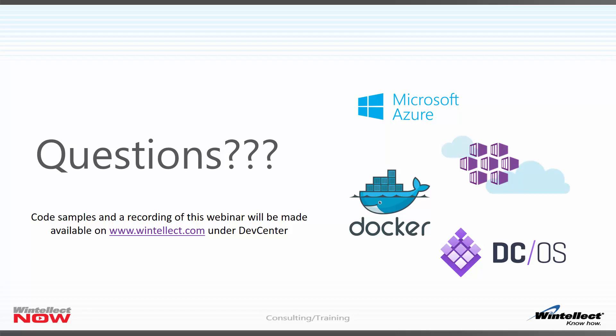One more question came in: I'm new to Docker coming from LOB .NET 4.5.2 — what are some use cases for creating Docker containers in my world? With .NET Core, you can actually use Docker to deploy containers using .NET Core on Windows containers or even Linux containers running .NET applications in a container. Question: What are the key differences between ACS and AWS for container solutions?